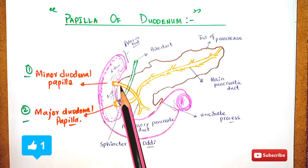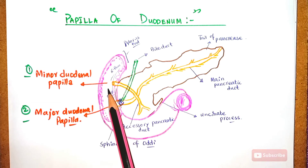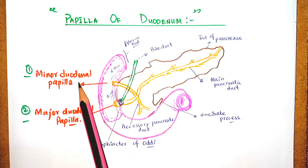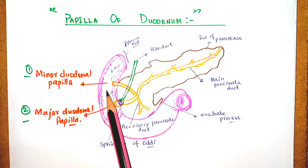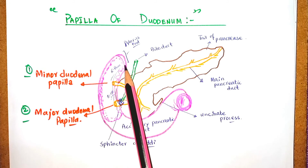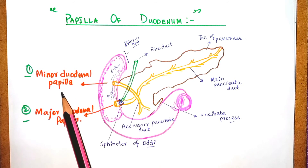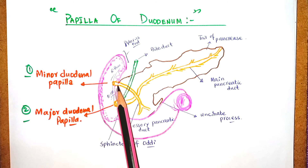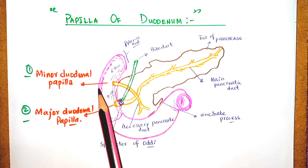At the site where the accessory pancreatic duct opens into the duodenum, it is called the minor duodenal papilla. It is about 1.9 centimeters and present 6 to 8 centimeters distal to the pyloric end of the stomach. It has importance in embryology — embryologically, the accessory pancreatic duct is the main drainage duct of the dorsal pancreas in the embryo.